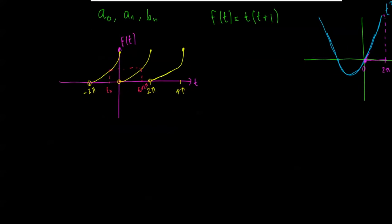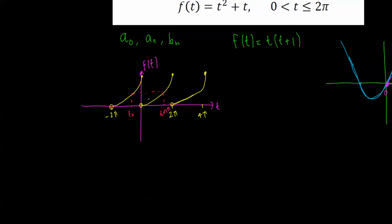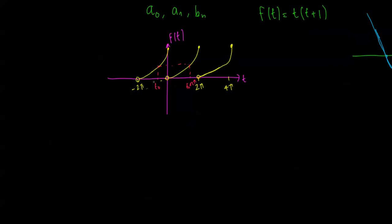The reason why we drew the graph was to determine whether it's an odd or even function, and it's actually neither. It's not an odd function because it's not reflected in the x-axis, and it's not an even function because it's not a mirror image in the y-axis. So we're going to have a noughts, aₙ's, and bₙ's.